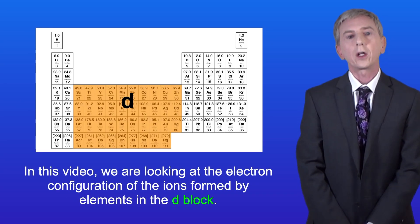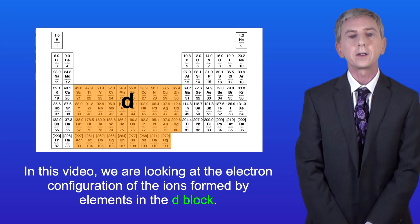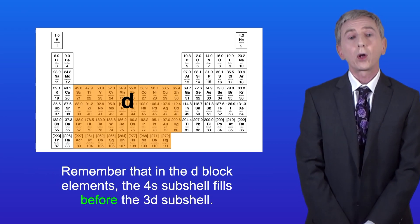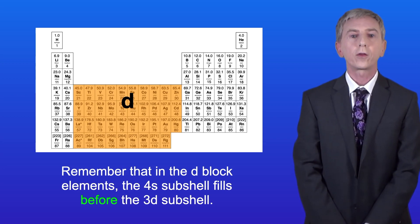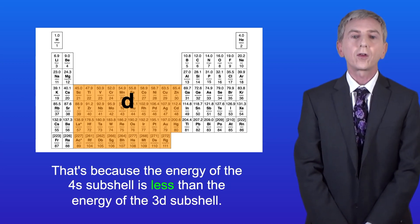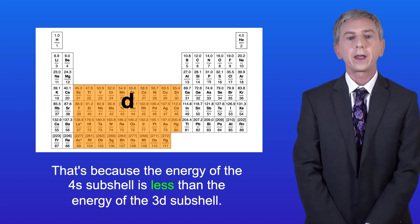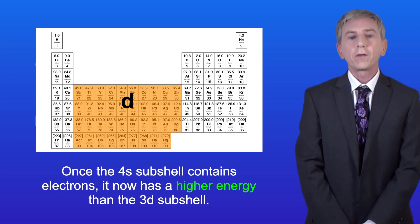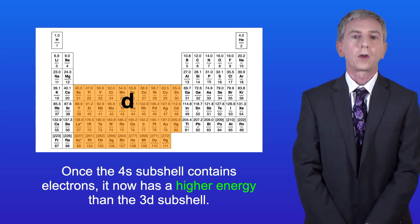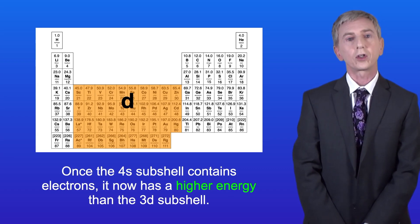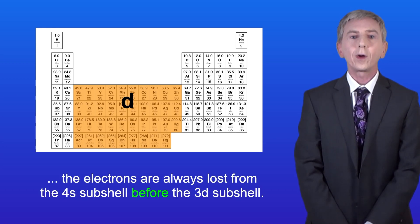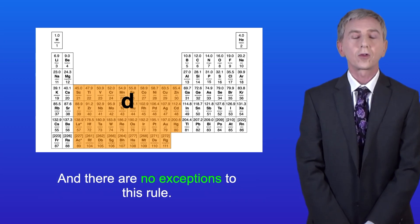Now in this video we're looking at the electron configuration of the ions formed by elements in the d-block. Remember that in the d-block elements the 4s subshell fills before the 3d subshell, and that's because the energy of the 4s subshell is less than the energy of the 3d subshell. Now there is one fact that you need to learn: once the 4s subshell contains electrons, it now has a higher energy than the 3d subshell. This means that when d-block elements lose electrons, the electrons are always lost from the 4s subshell before the 3d subshell, and there are no exceptions to this rule.